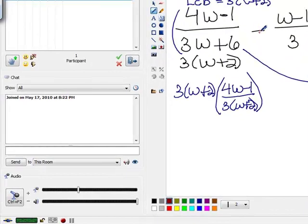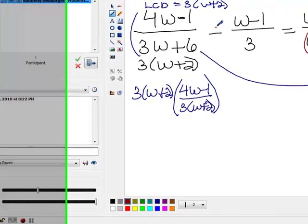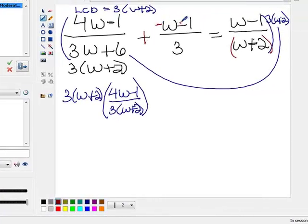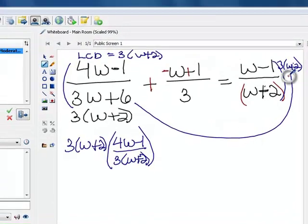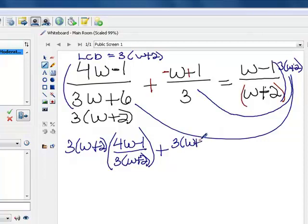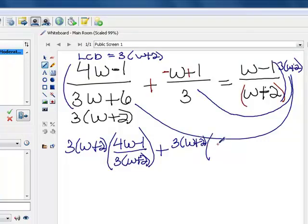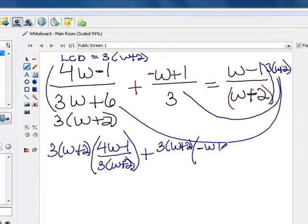I notice there's a subtraction here, and I did not distribute it, so let's distribute the subtraction across the top of this fraction, and then distribute our least common denominator. That way we won't make an error with our positives and negatives. So we're going to do this times that, which will be 3 times w plus 2 times negative w plus 1 over 3 equals, and now distribute it to the last one here.